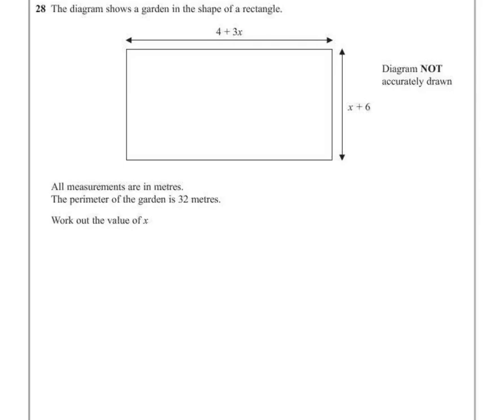Question 28. The diagram shows a garden in the shape of a rectangle. All measurements are in metres. The perimeter of the garden is 32 metres. Work out the value of x.